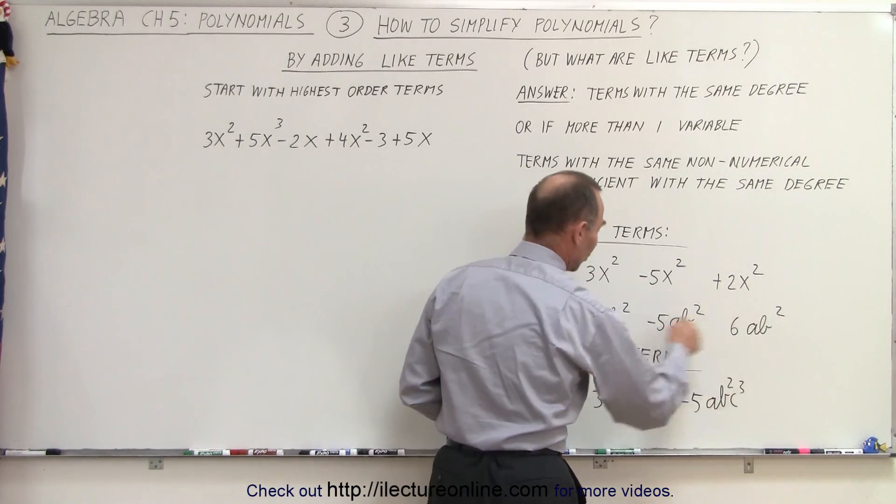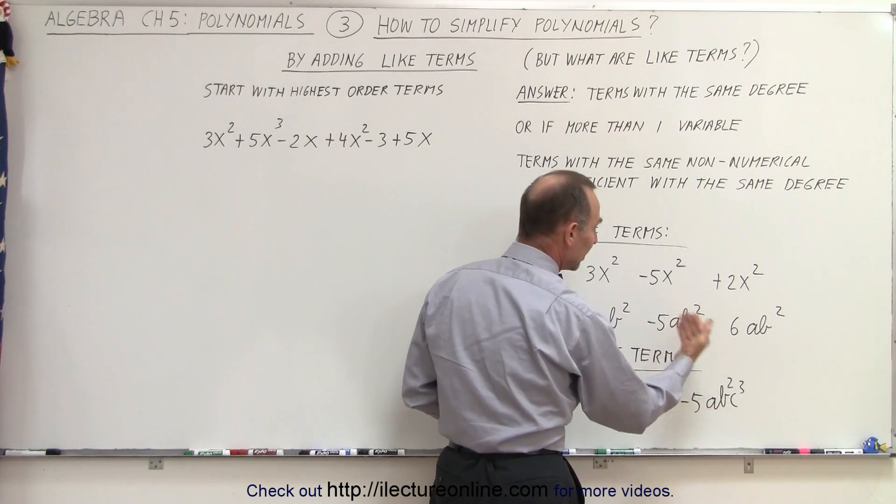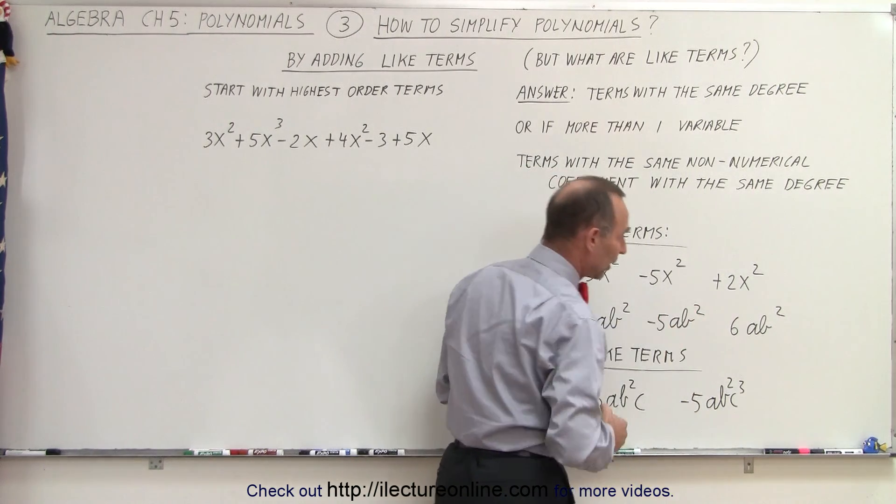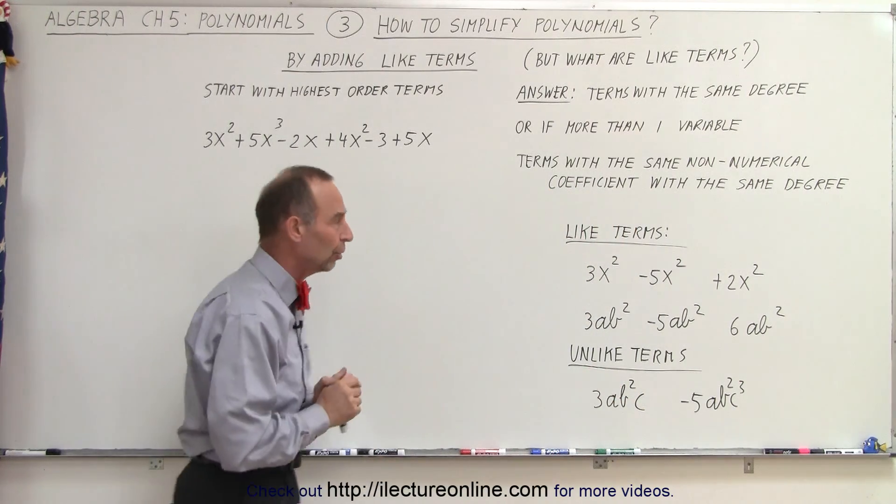Here, if we add these three terms together, we have 3 plus 6 is 9, minus 5 is 4. The answer would be 4ab². And here, we would not be able to add those terms together because they are not like terms.